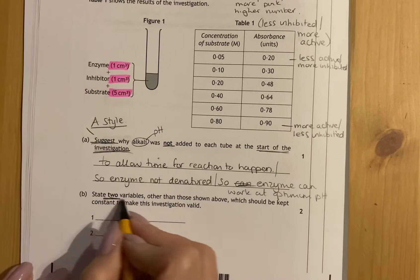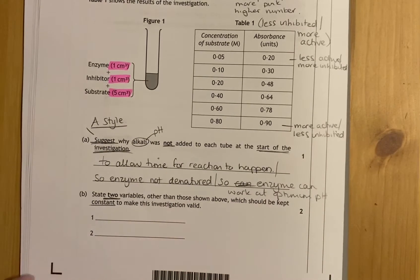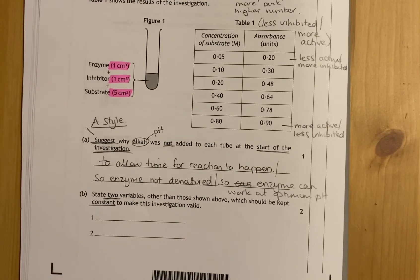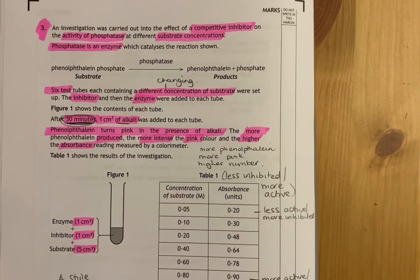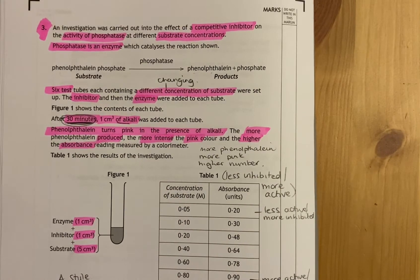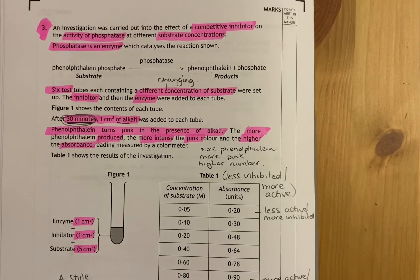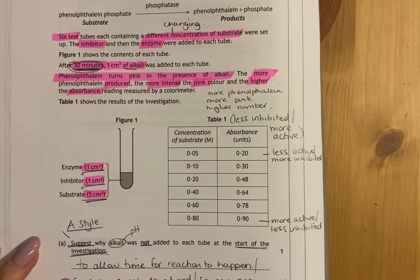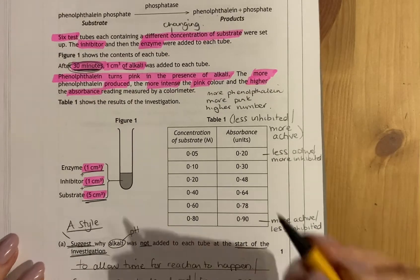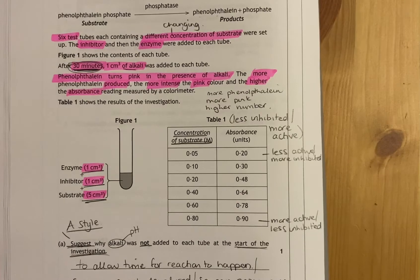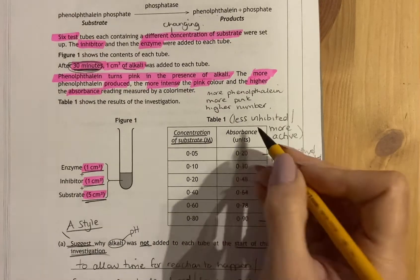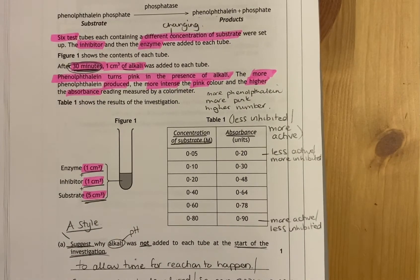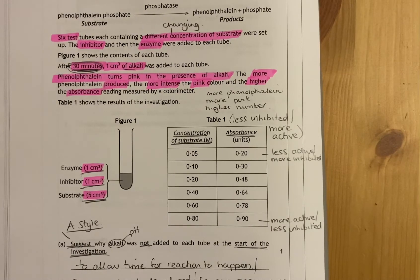The next question says state two variables other than those shown above which should be kept constant to make this investigation valid. I've given you a list of different factors that can be kept constant. First, you need to rule out the ones you cannot use. They've stated the duration, so you can't state duration or time. They've told you volumes of enzyme, inhibitor and substrate, so you cannot use them. You can't state concentration of substrate because they have changed that. You can't say absorbance must be kept the same because that is something they are measuring as a result.